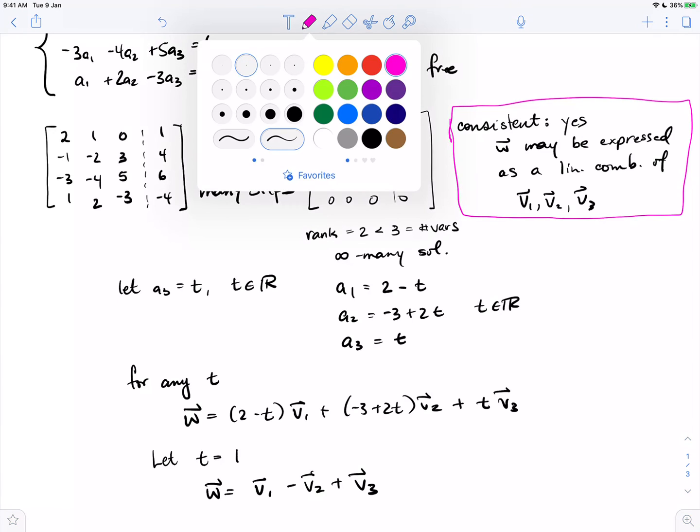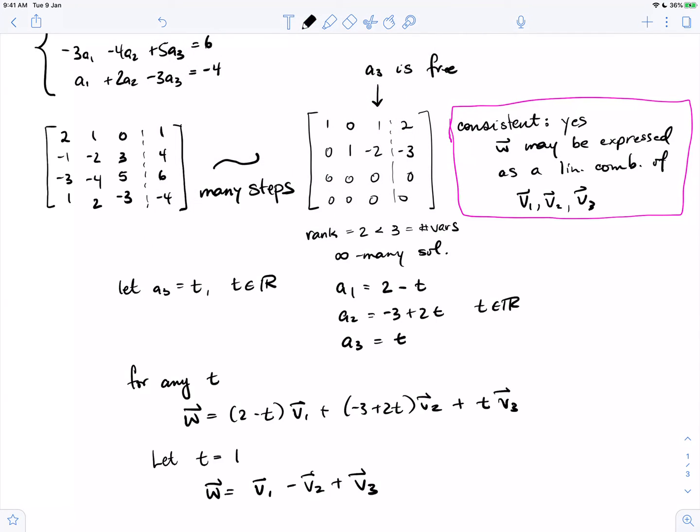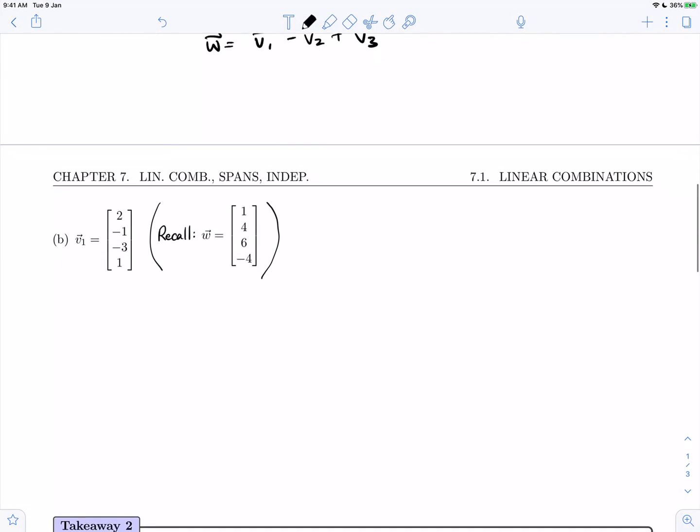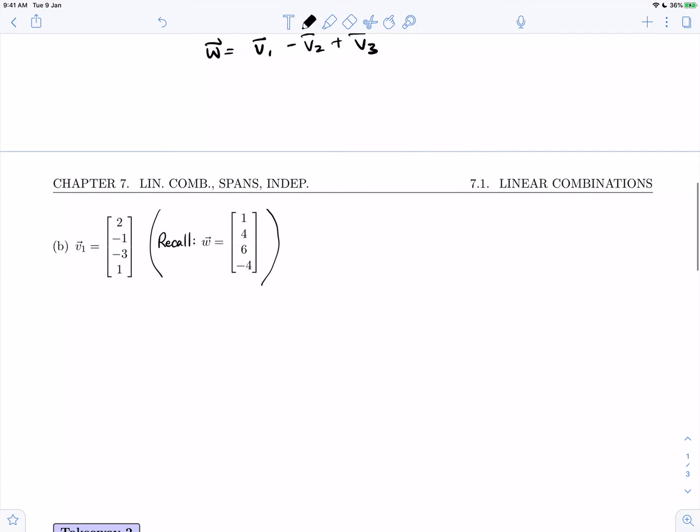Let's look at part b, which asks the same question but gives us a different set of vectors. I've recopied w here so we have our vector on this page. We're being asked, is w a linear combination? Are there constants? A linear combination is normally constant times vector plus constant times vector plus as many vectors as you have.